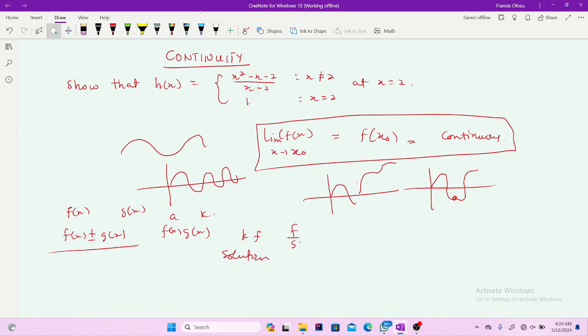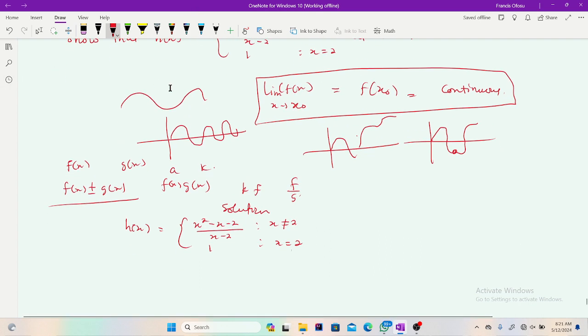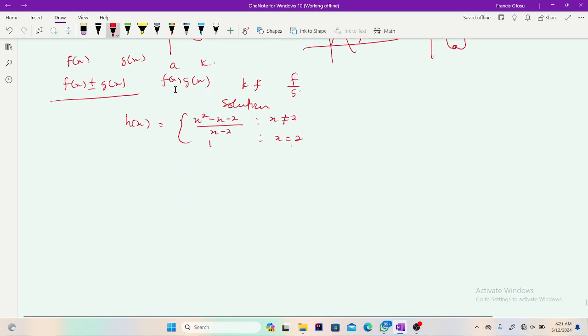It says show that the function h(x), which is giving us a piecewise function: x squared minus x minus 2, all over x minus 2, where x is not equal to 2; and h(x) is 1 when x is 2, at the point x equals 2. I'll write it here. h(x) equals x² - x - 2 over x - 2, then 1, where x is not equal to 2, then where x is equal to 2.